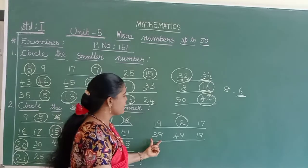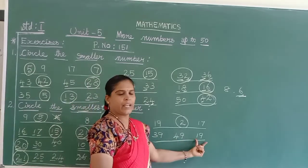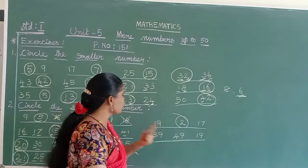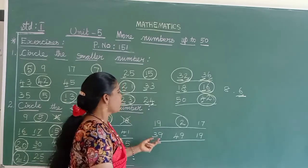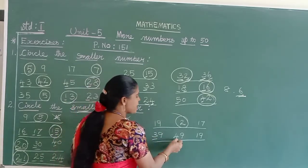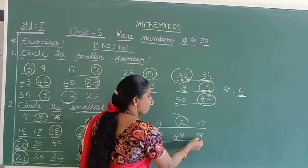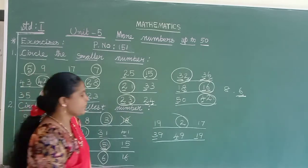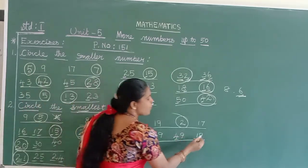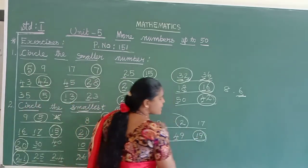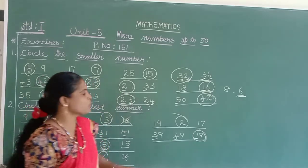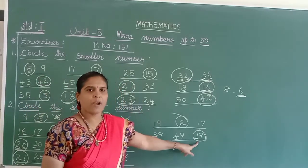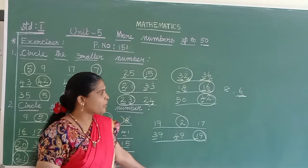Next: 39, 49, 19. Everything is 2-digit. Come to the tens place: 3, 4, 1. Which is the smallest? 1 is the smallest. So you should select 19 — 19 is the smallest one in this group.